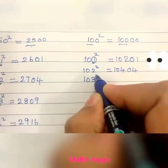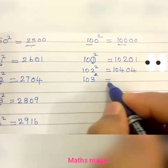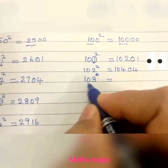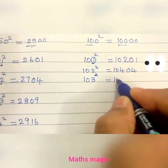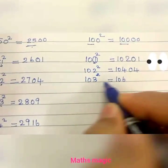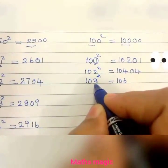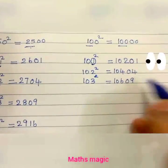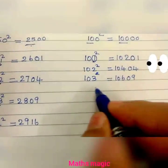For 103 squared: double 3 is 6, so 100 plus 6 is 106. Then the square of 3 is 9, written as 2 digits: 09. So 103 squared is 10,609.